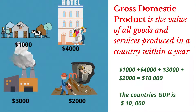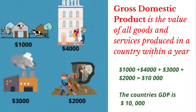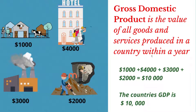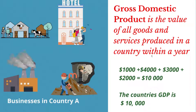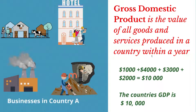The illustration shows the money value of goods and services produced in country A by four different industries. Notice that the level of production varies from one industry to another.